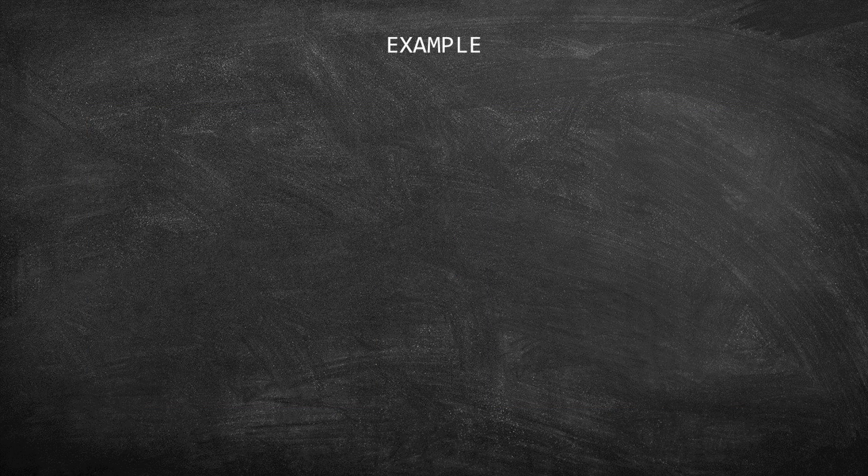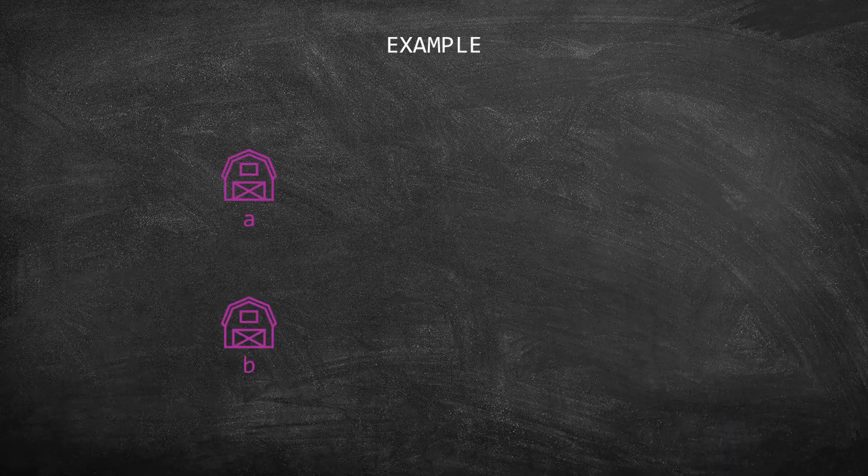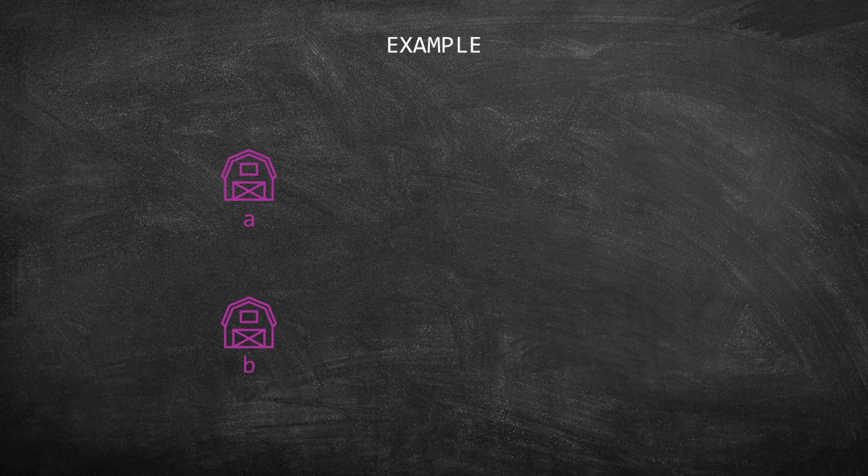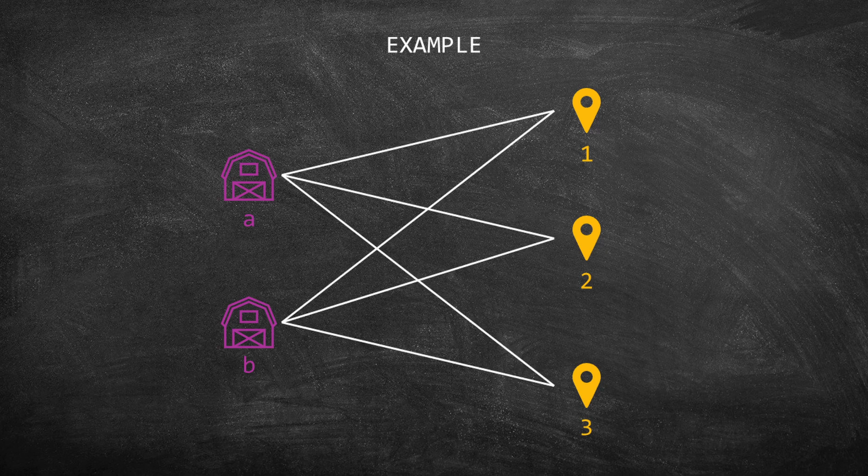Imagine that a specific product has two suppliers, A and B. There are three customers, one, two, and three, and there is a path between each supplier and each customer.